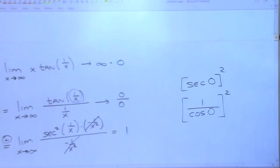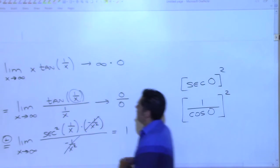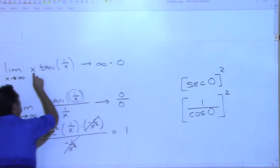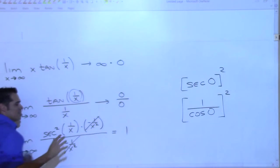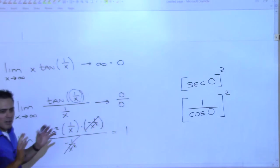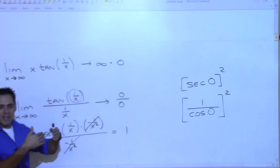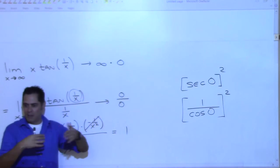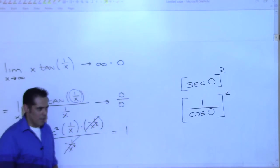This is one of those situations where x wants to be big and tangent of one over x wants to be zero, and they sit there and argue and compromise — they just meet at one. So the limit approaches one.